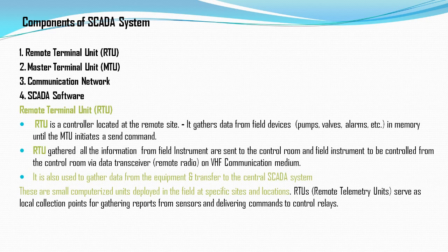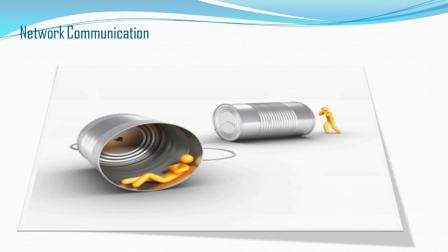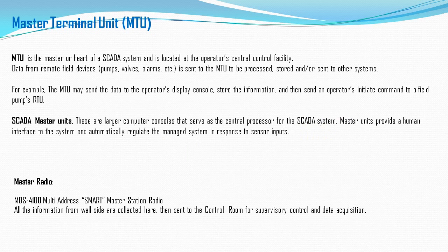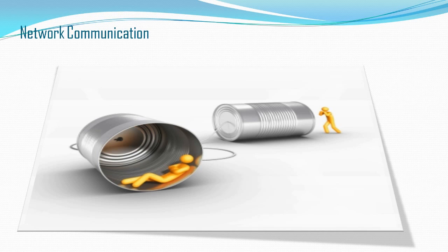The RTU is a local gathering and collection point. It gathers information from field devices like pumps, valves, and alarms, and then sends it through the telemetry system to the master control room. Network communication is very important — you need to transfer information from the local site to the remote site. This also involves cyber security, which will be covered in more detail after the software and programming portions.